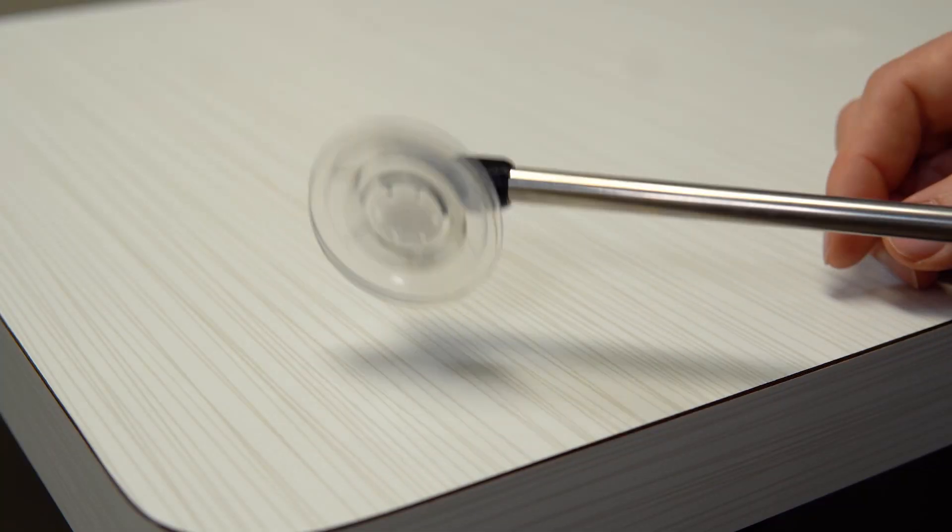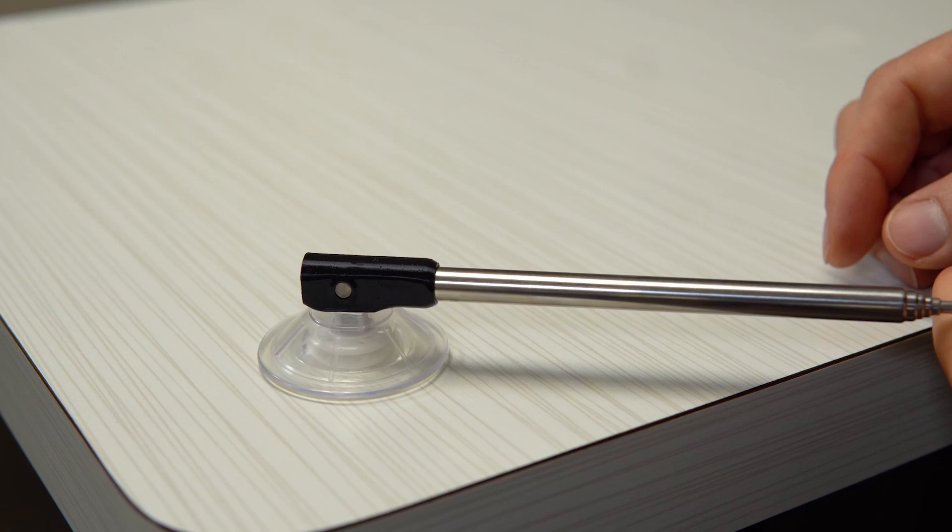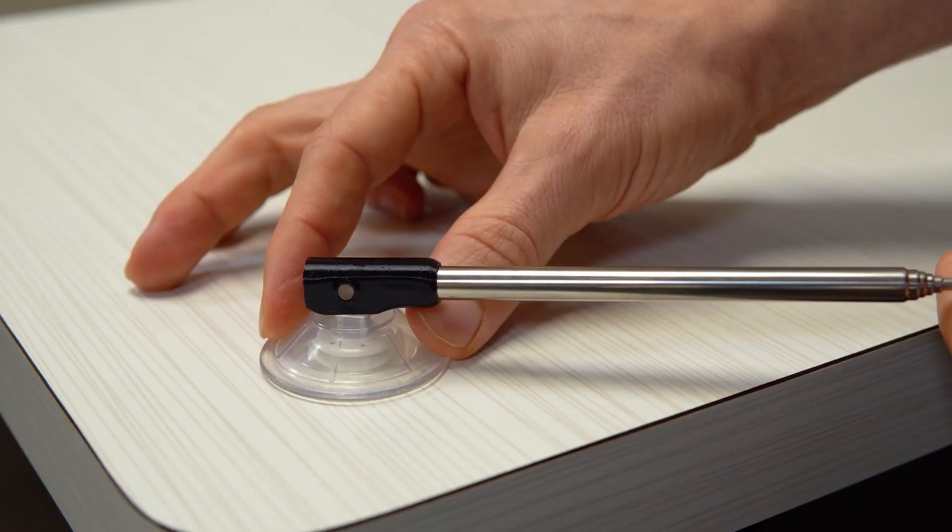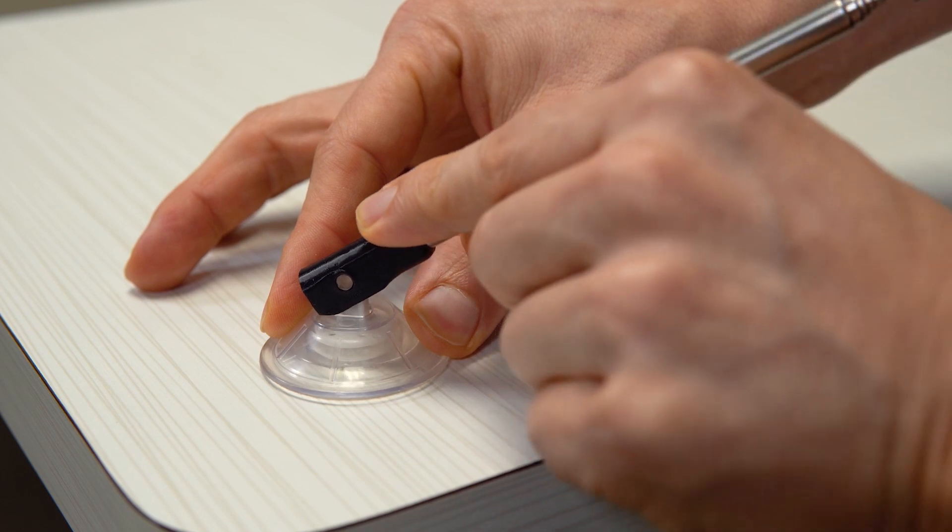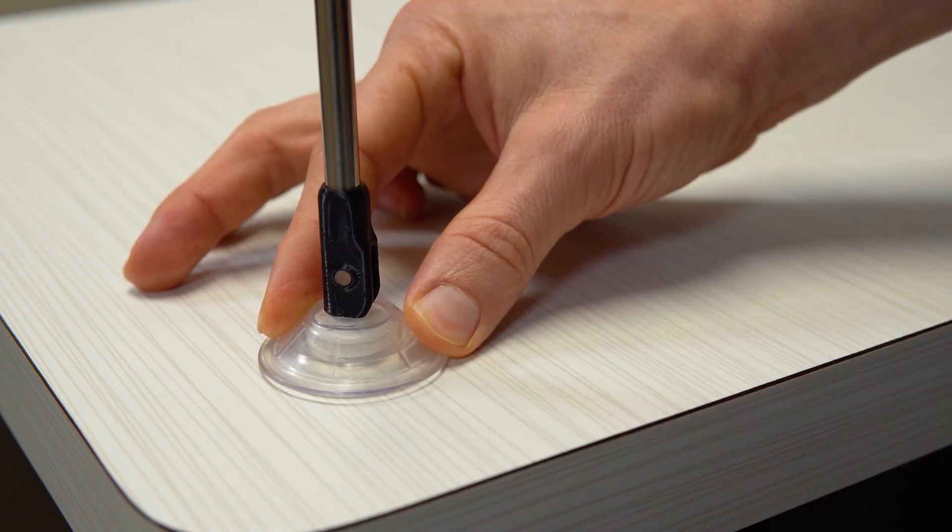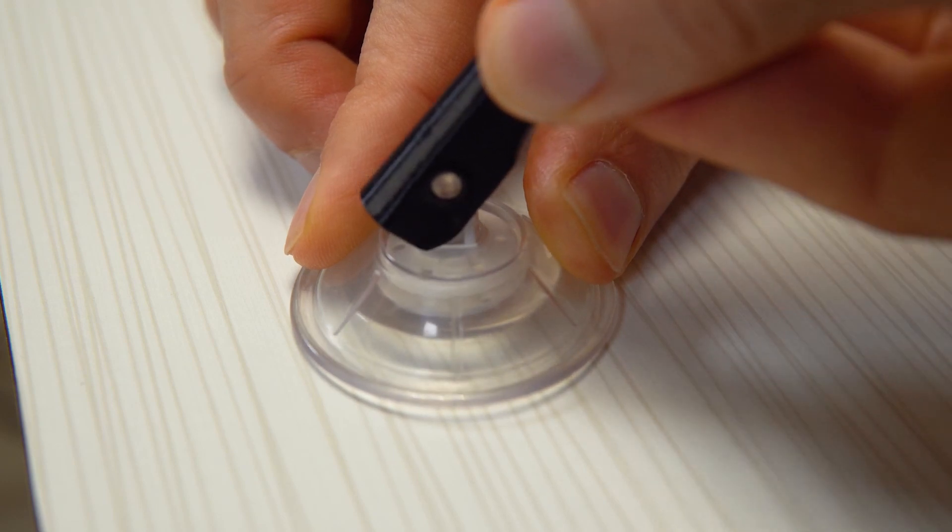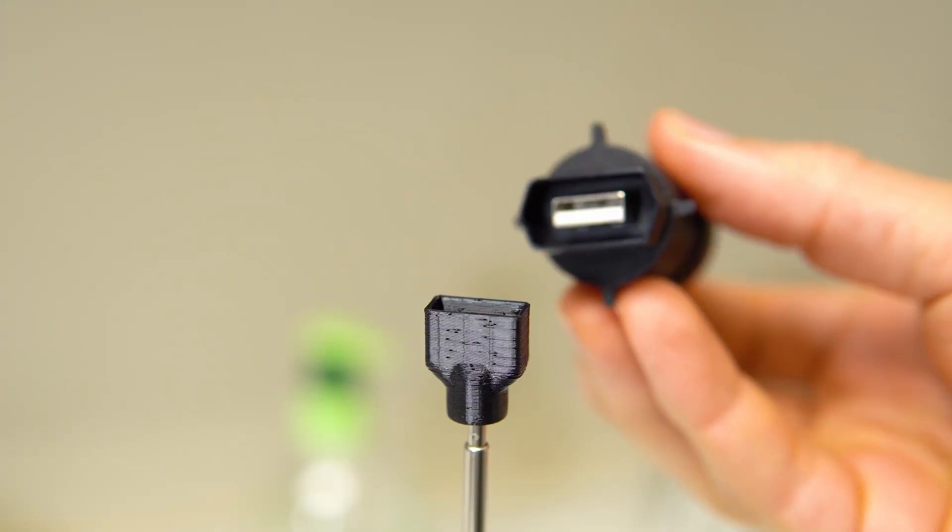Step one: place the suction base on a smooth flat surface. Step two: press down on the suction base while pulling the black base lever upward until it locks into the vertical position. This will engage the suction of the base. Step three: connect the light unit to the top of the base lever.